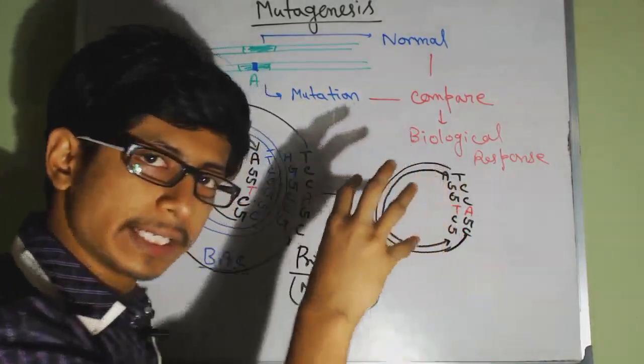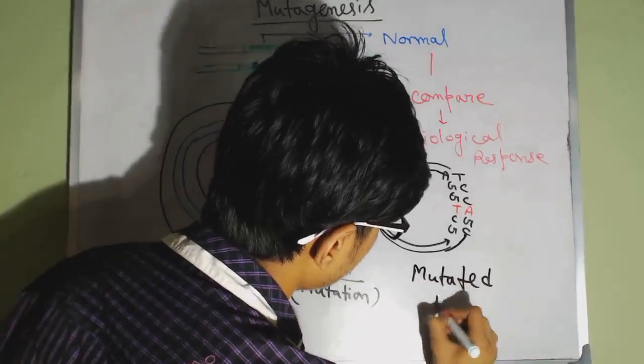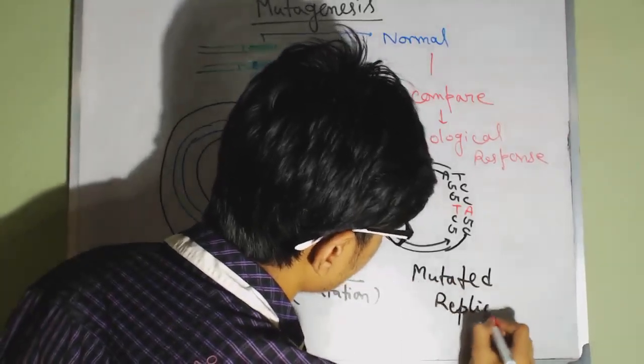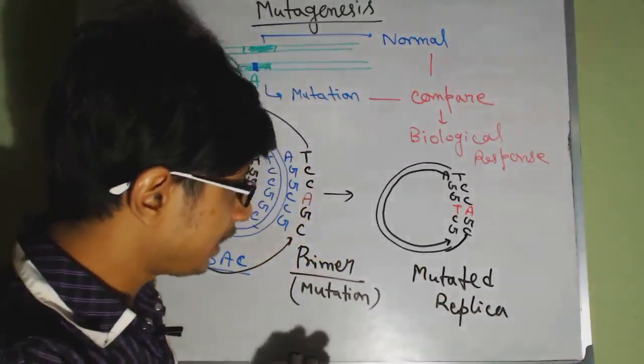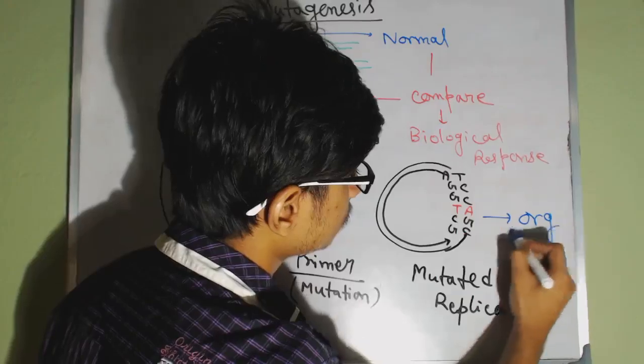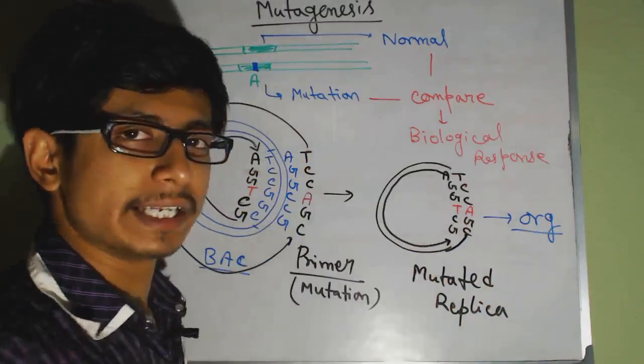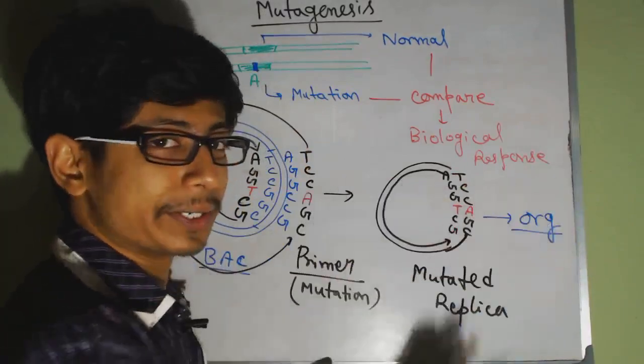Then we take that mutated replica of the DNA and we insert it to that organism. And once you insert it to the organism, the ligase for that organism will seal this nick, and the rest of the process will work there.